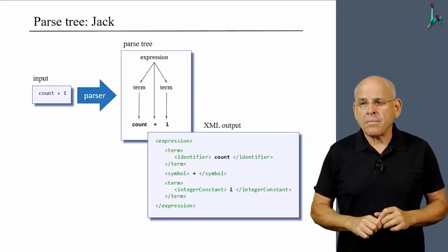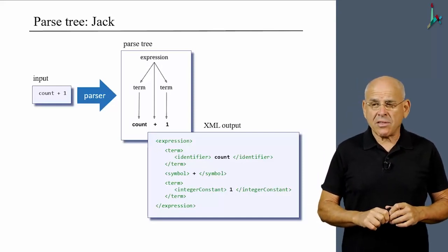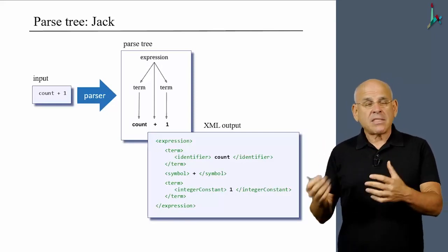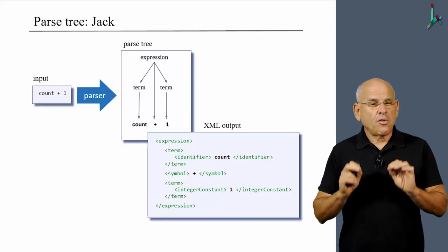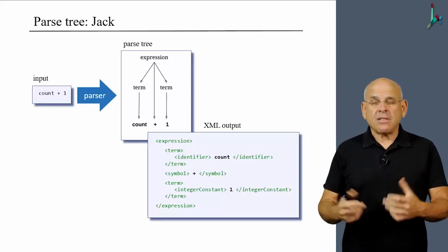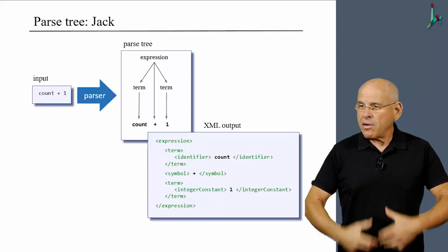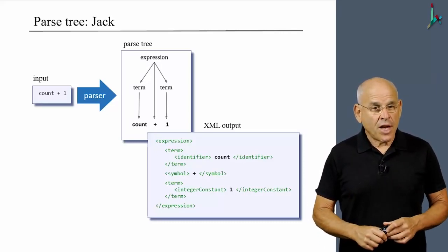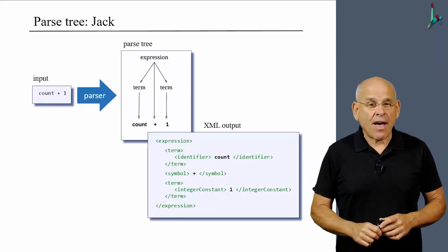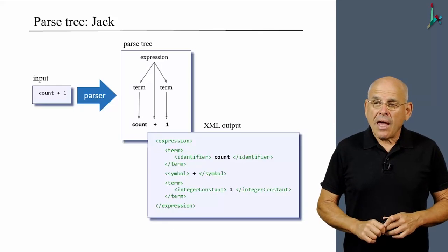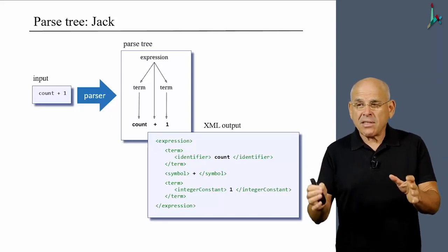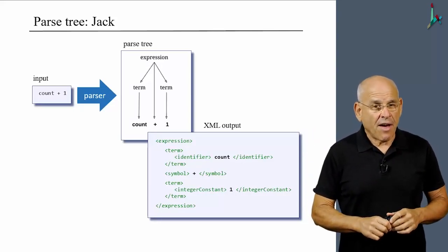Now, I would like, in closing, to make two important observations. First of all, what we see here is the XML file that corresponds to the input count plus one. So you can imagine that if we have to create the parse tree for a full blown Jack program, we are going to end up with a gigantic XML file, and that's perfectly okay.